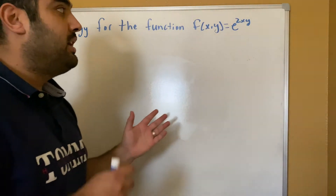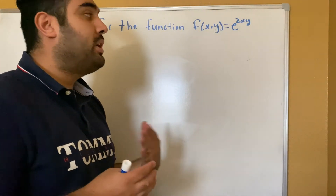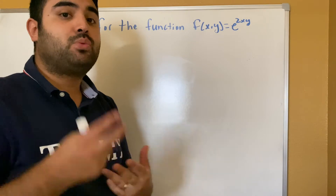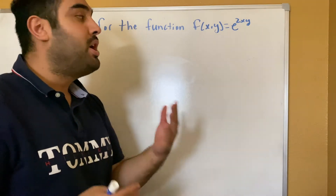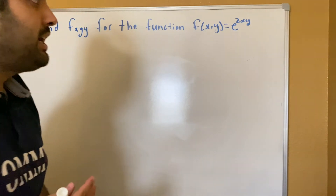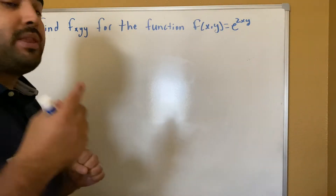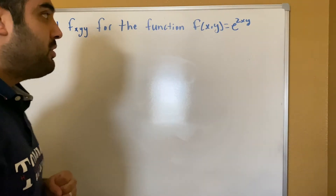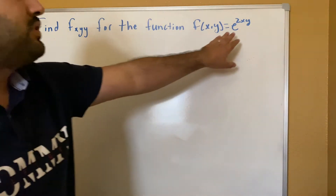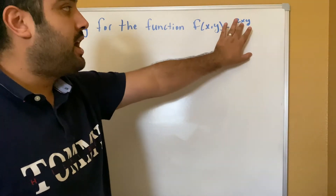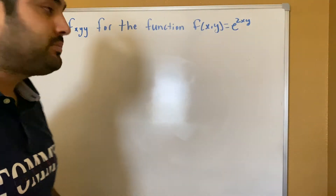Partial derivatives are given whenever you have a function with two variables. Normally, when we take a derivative, we have seen with one variable, but here we have two variables, our x and our y.